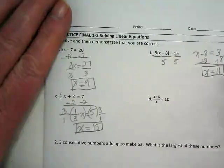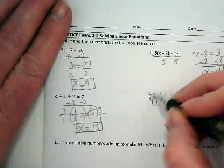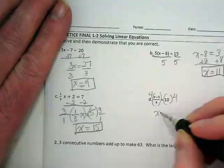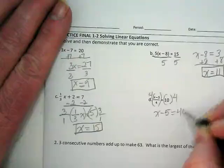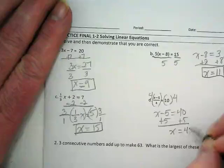For the final one here, I see a denominator of 4, so I'm going to multiply by the reciprocal. So I end up with x minus 5 is equal to 40. x equals 45.